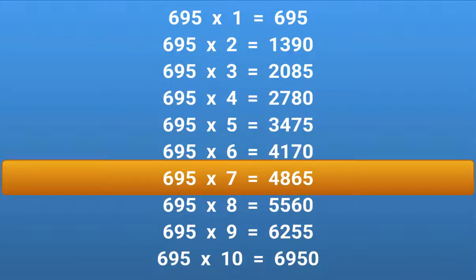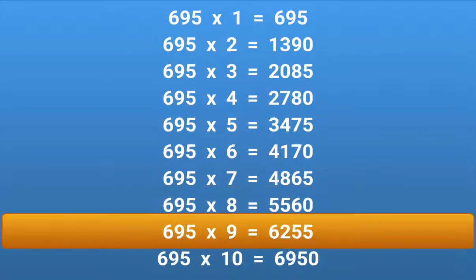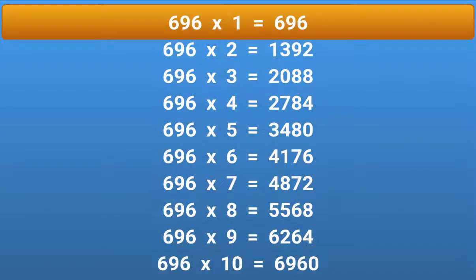695 × 7 = 4865. 695 × 8 = 5560. 695 × 9 = 6255. 695 × 10 = 6950.